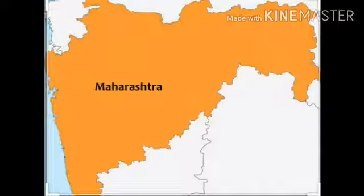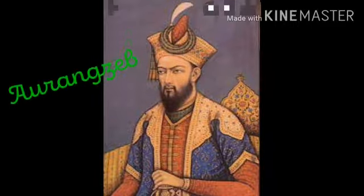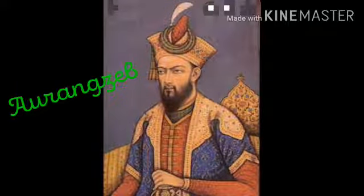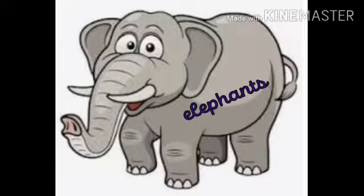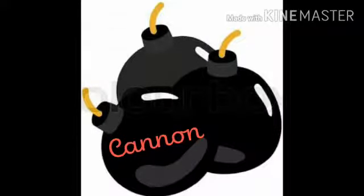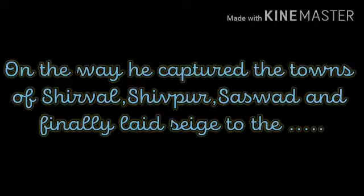Meanwhile, constant Mughal attacks from the north had practically ruined Maharashtra. Chhatrapati Shivaji Maharaj therefore turned his attention northwards and carried out raids in the territory of the Mughal Emperor Aurangzeb. This enraged Aurangzeb, and he sent Shahist Khan, his uncle, to deal with Chhatrapati Shivaji Maharaj and teach him a lesson. Shahist Khan with a huge army of 75,000 men and hundreds of elephants, camels, and pieces of cannon marched on Pune.